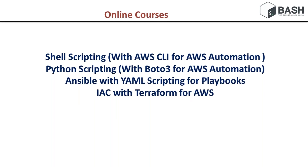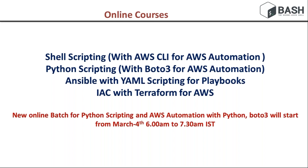This course sequence will be repeated. Shell scripting takes around 25 hours, then Python scripting at 35 hours, then AWS automation with Boto3 at 25 hours, then Ansible with YAML scripting at 25 hours, and IaC with Terraform at 25 hours. If you are interested, you can ping me on WhatsApp or drop a mail to 'dowithpython@gmail.com'. The next batch starts on March 4th covering Python scripting and AWS automation with Boto3.